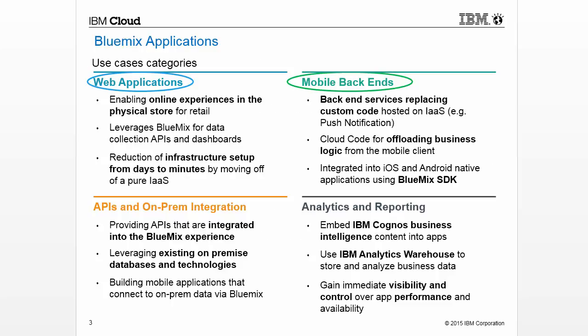In Bluemix, an application or app represents the artifact that a developer is building. The application lifecycle in Bluemix and Cloud Foundry are identical, regardless of how you push the application to Bluemix. Web applications and mobile backends are the two most common categories. Mobile apps run outside the Bluemix environment and use services that the mobile apps are exposed to, while web apps consist of all the code required to be run or referenced at runtime.